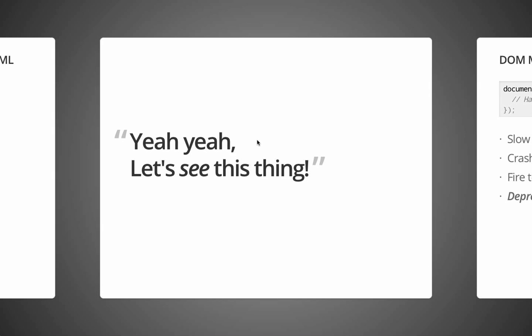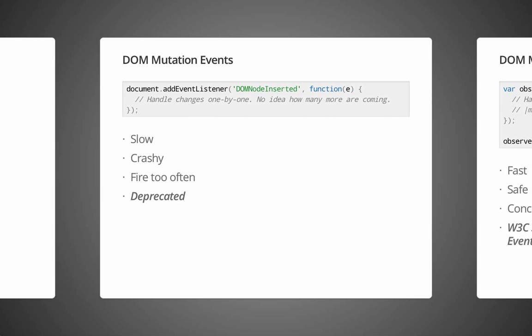Now that you've seen it working, let's understand a bit more about mutation events versus mutation observers versus the mutation summary library. DOM mutation events are broadly speaking what is available right now in the web platform for being notified when something happened to the markup of your page. But they've been deprecated for three main reasons: generally speaking, they're very, very slow — people found them too slow to use. They tended to be the source of pretty bad browser crashes. And additionally, they were just really chatty — they fired all the time and were hard to manage.